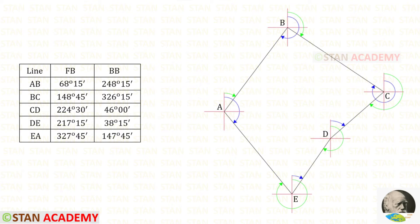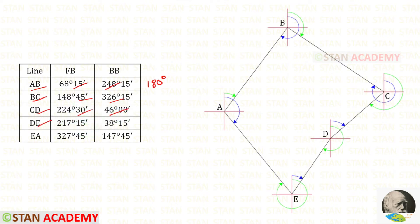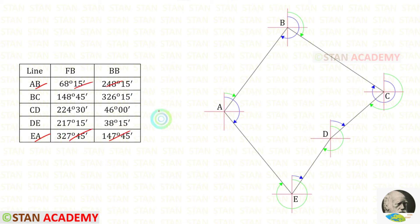Now we are going to find the stations affected by local attraction. In a line, the difference between forebearing and back bearing should be 180 degrees. In AB, the difference is 180 degrees. In BC, the difference is not 180 degrees. In CD also, it is not 180 degrees. In DE also, the difference is not 180 degrees. In EA, the difference between the two bearings is 180 degrees. So only in lines AB and EA is the difference of forebearing and back bearing equal to 180 degrees.